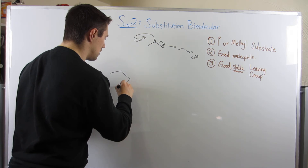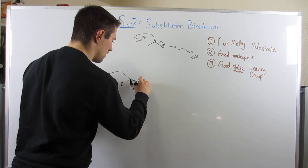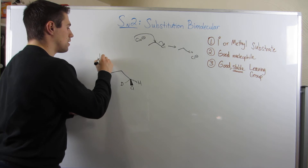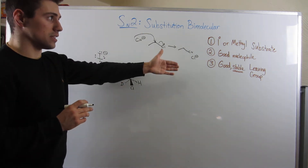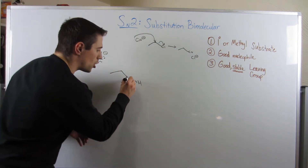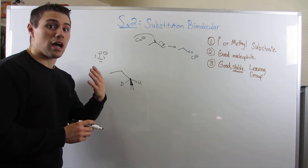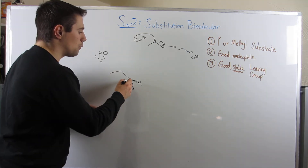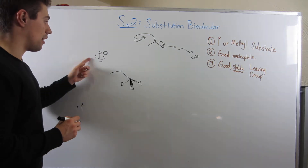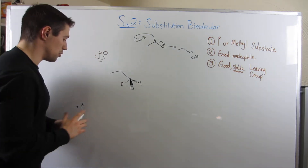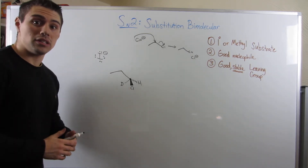So if I drew something like this, and let's say I throw in some I-, also a very good nucleophile. Let's go through our checklist: are we primary or methyl? Our carbon is attached to a Cl, a hydrogen, a deuterium — which is just hydrogen with two neutrons — and one carbon, so we are indeed primary. Do we have a good nucleophile? Yes. Do we have a good stable leaving group? Chlorine — Cl- — would be a good stable leaving group.